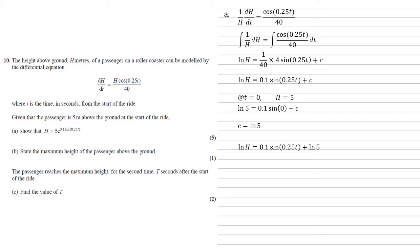We've therefore got ln h equals 0.1 sin 0.25t plus ln 5. Now we want to get rid of the log naturals, so if we take ln 5 from both sides, we get this. Using our rules of logarithms, our left hand side will become ln of h over 5, which is equal to 0.1 sin 0.25t. Taking the exponential of both sides gives us h over 5 equals e to the 0.1 sin 0.25t. Multiply both sides by 5, and there's our answer.